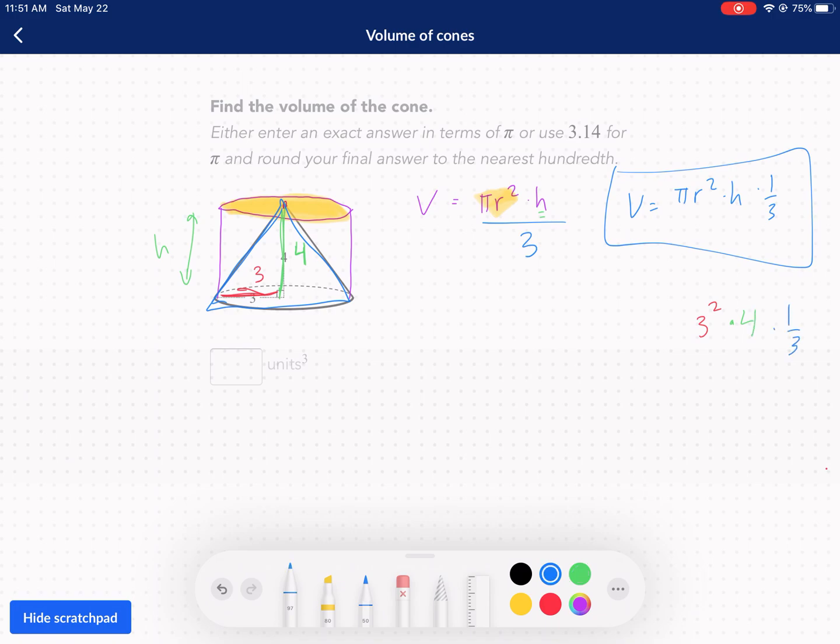And then we're just going to apply the other parts. We're going to leave it in terms of pi, so we're going to handle that last. Anytime it says in terms of pi, you want to just leave that for the very last thing. Let's go all blue, leave the pi. I have three squared, nine times four times one-third.